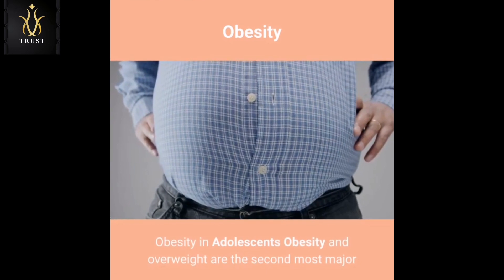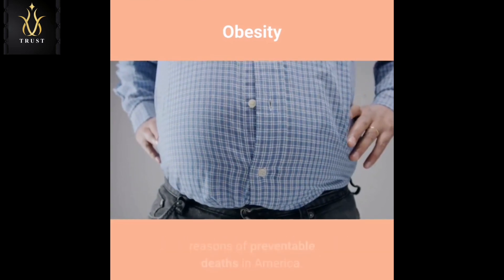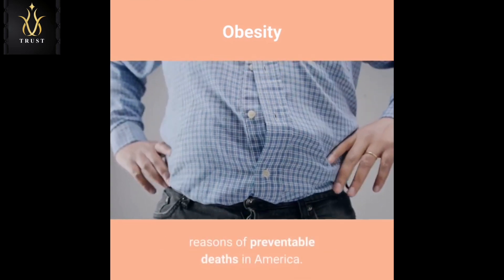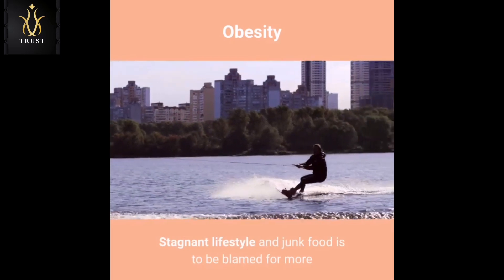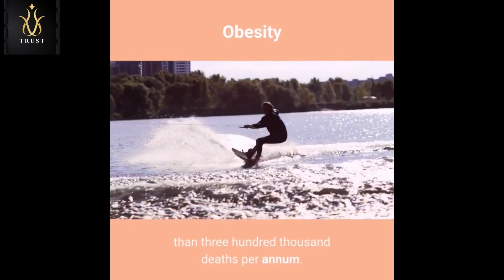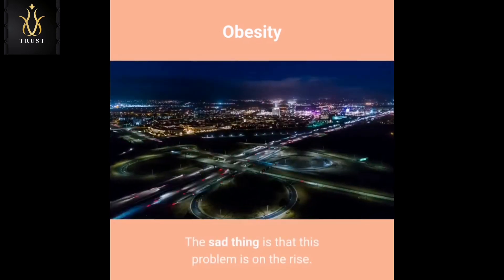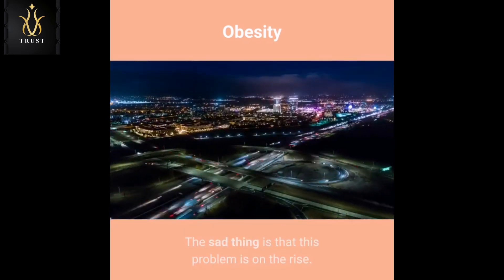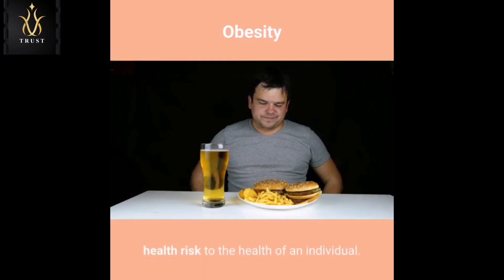Obesity in adolescents: obesity and overweight are the second most major reasons of preventable deaths in America. Stagnant lifestyle and junk food are to be blamed for more than 300,000 deaths per annum. The sad thing is that this problem is on the rise. Obesity is a chronic disease which poses serious health risks to the health of an individual.